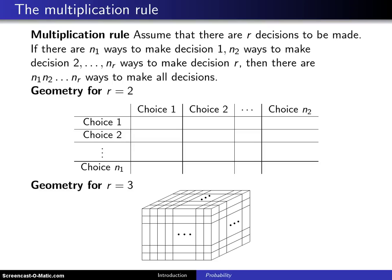Now that we've seen the difference between enumeration, which is listing all of the possibilities, versus counting, we move to three counting techniques.